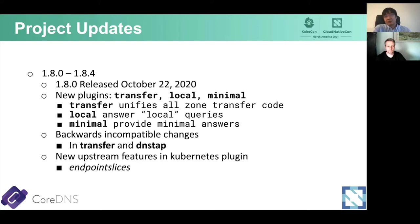Now let's come to the project update. Since last year, we have released CoreDNS 1.8. Version 1.8.0 was released on October 22nd, 2020. There are several plugins introduced in 1.8: a transfer plugin that unifies all zone transfer code, a local plugin that answers local queries, and a minimal plugin that provides minimal answers, which can be very useful if you want to reduce DNS response traffic.